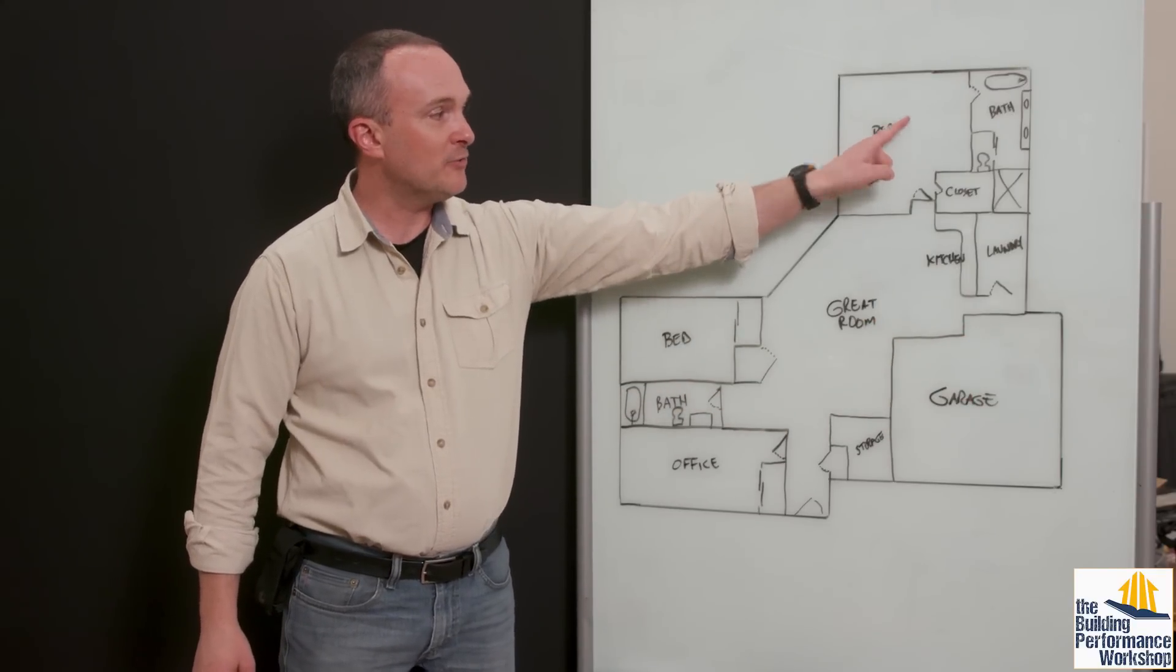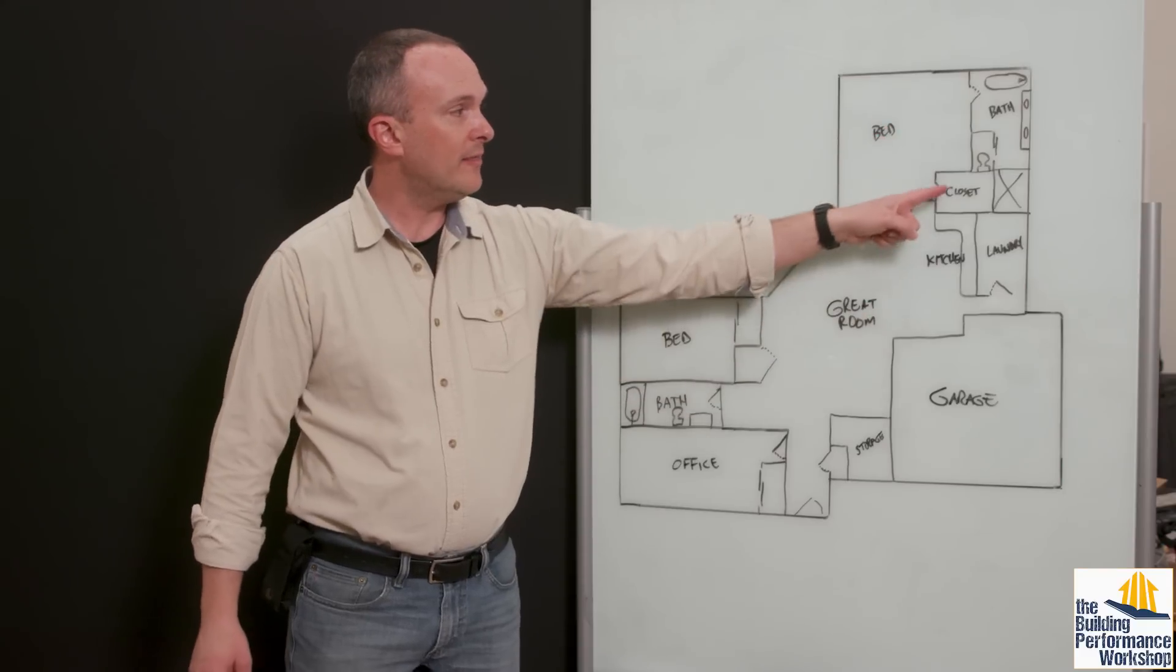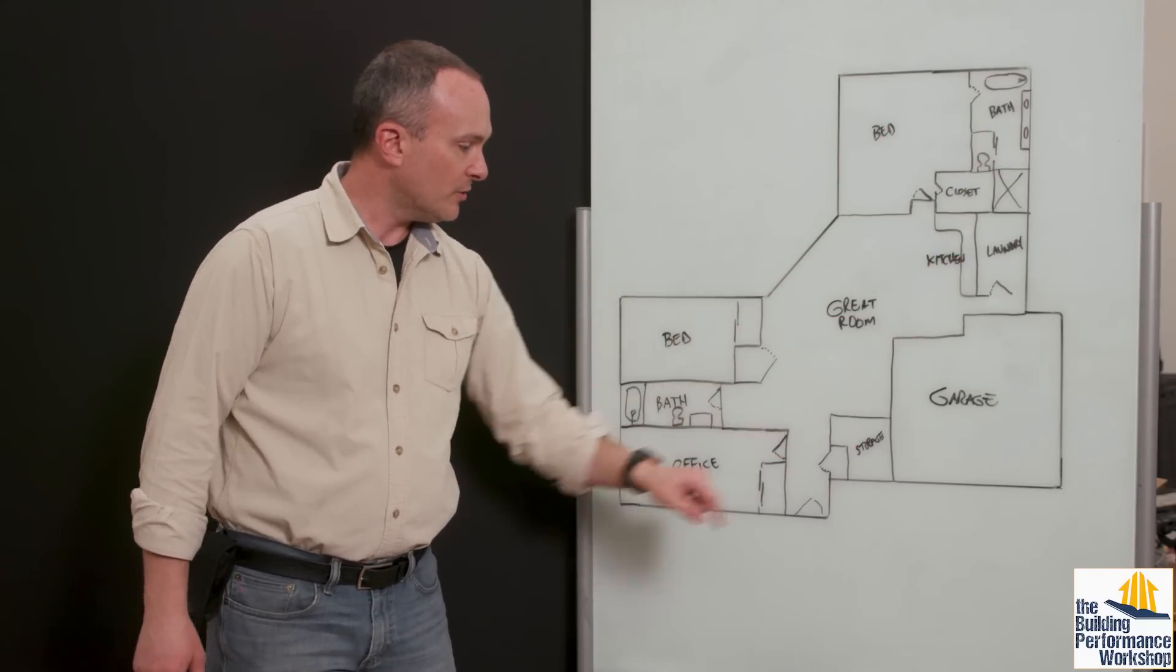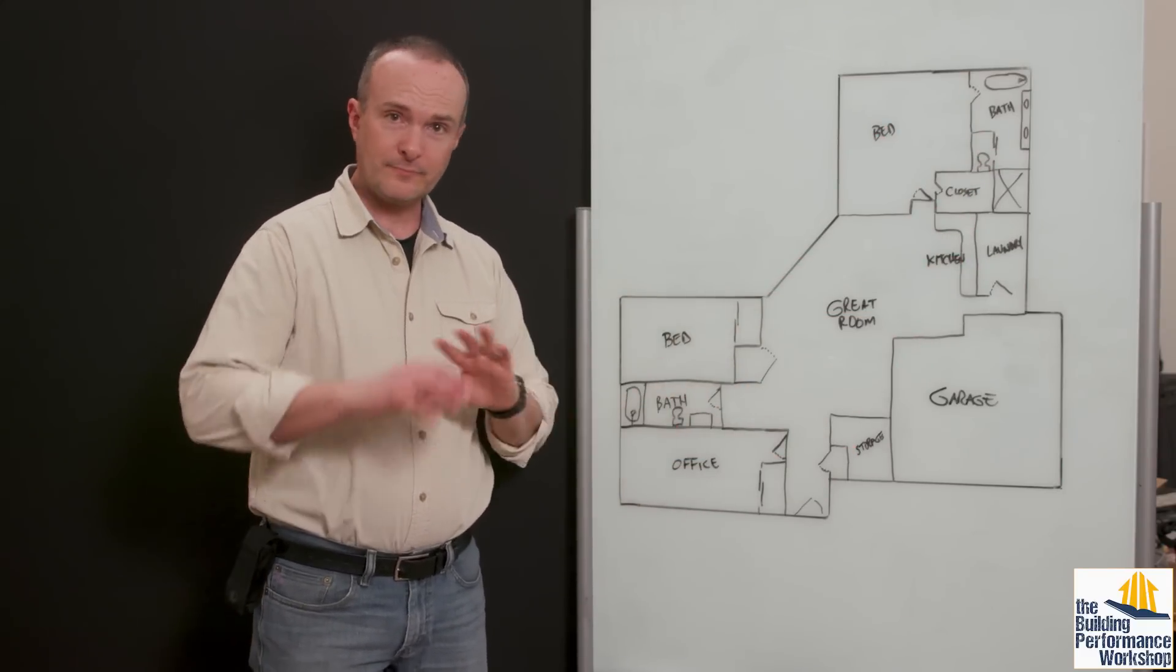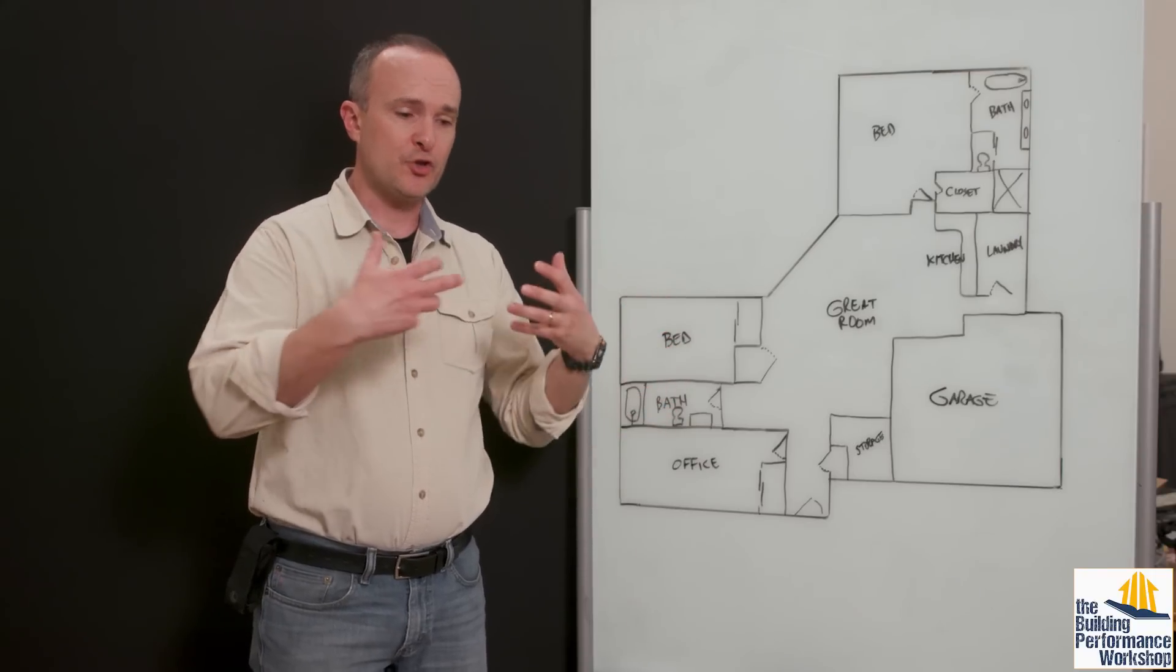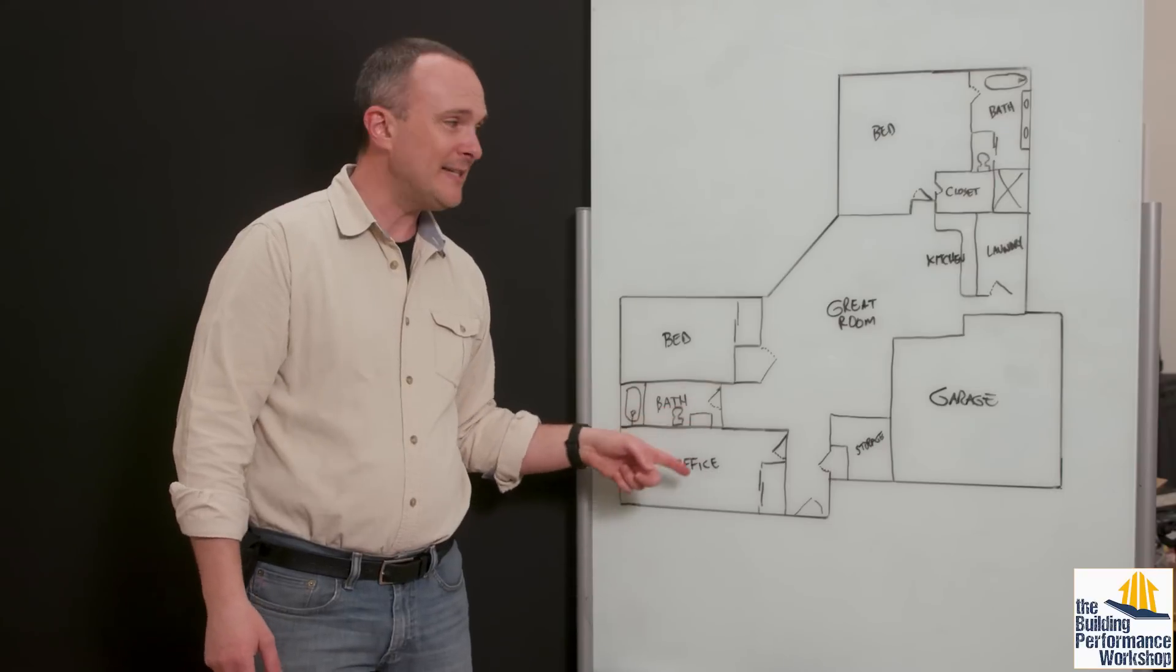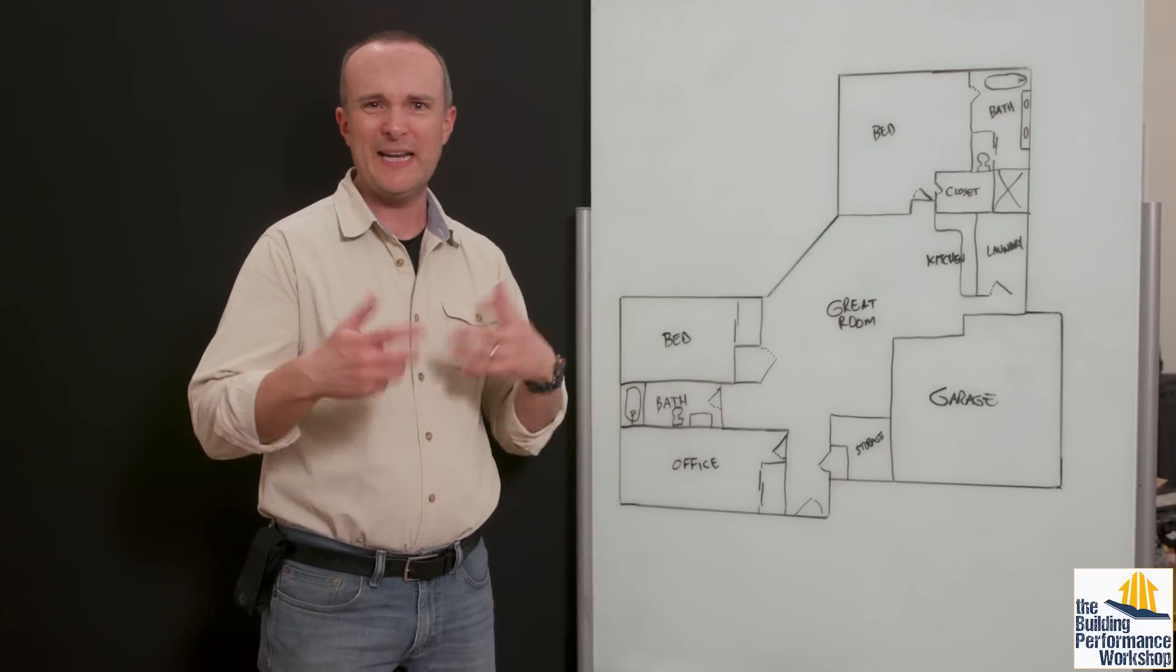You're going to need a mini split head in the back in the bedroom. Then we're left with the closet, the laundry room, the bathroom here, the storage room and the bathroom all without any direct conditioning device. So we're going to have to use that transfer fan idea on a lot of these different things to try and get the air to circulate.